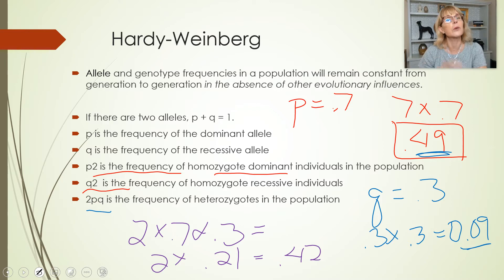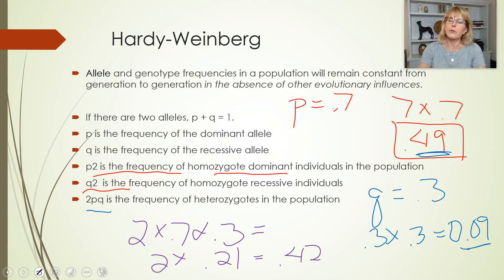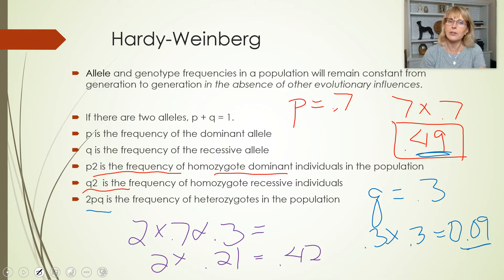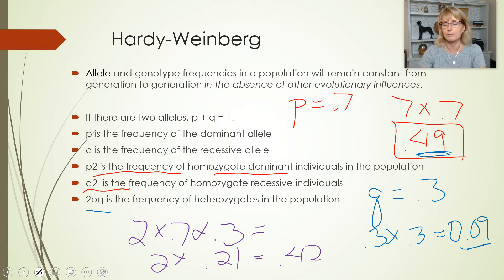2pq equals 0.42, or 42%. So in this population: 49% would be homozygous dominant, 9% would be homozygous recessive, and 42% would be heterozygous. They would stay that way unless some evolutionary force was acting on the population, which we'll cover next week.